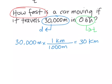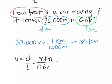Now we can plug this into our formula. Distance over time, that's going to equal 30 kilometers over 0.6 hours. And 30 divided by 0.6 equals 50 kilometers per hour.